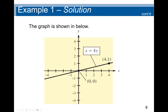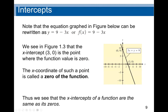So the solution gives us two points: (4, 1) and (0, 0). To plot a graph, we need at least a minimum of two points — the y-intercept and x-intercept is the quickest way. We should also note that the equation graphed can be rewritten as y = 9 − 3x, or using function notation, f(x) = 9 − 3x.